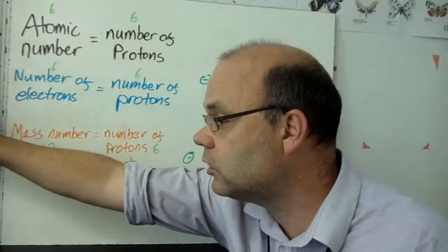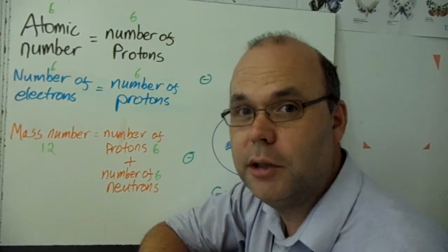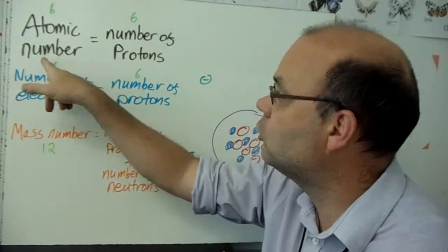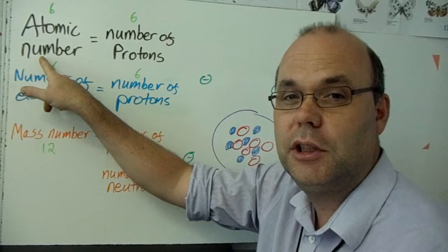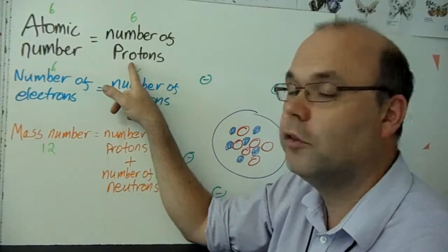We use the protons to decide what element it is. If you look at your periodic table, you'll see that every single element has a different atomic number. It's like its ID number. And they get that by looking at the number of protons.